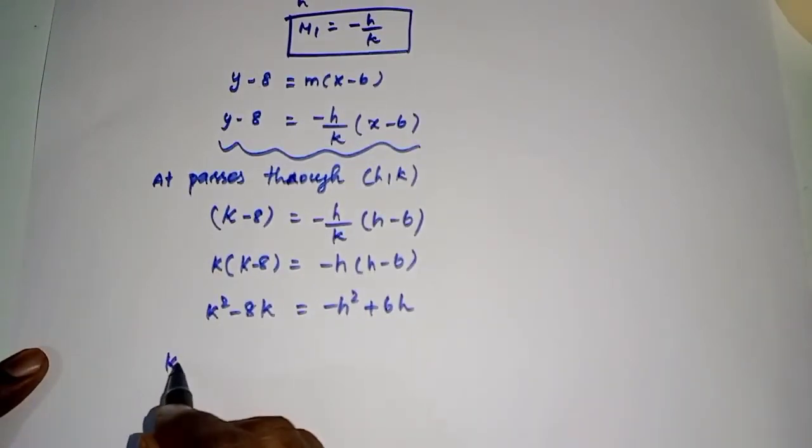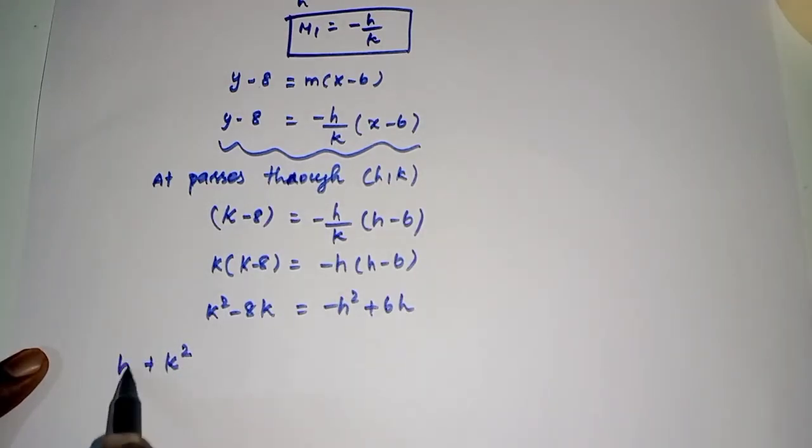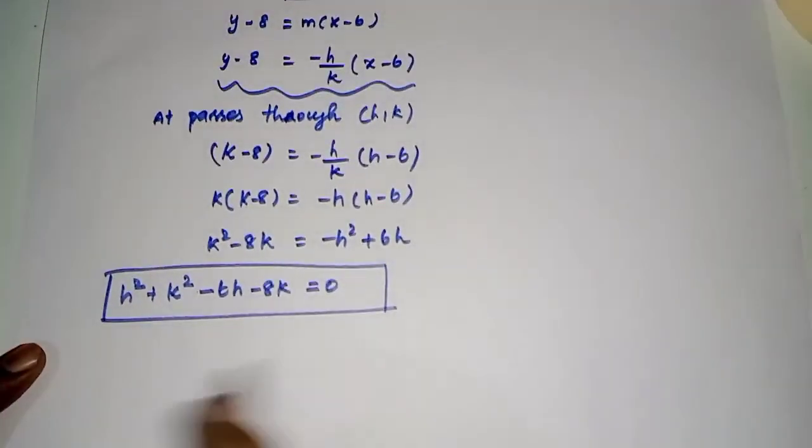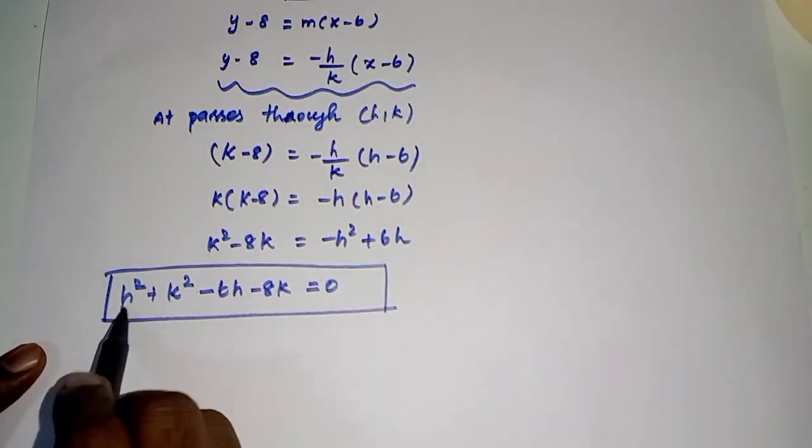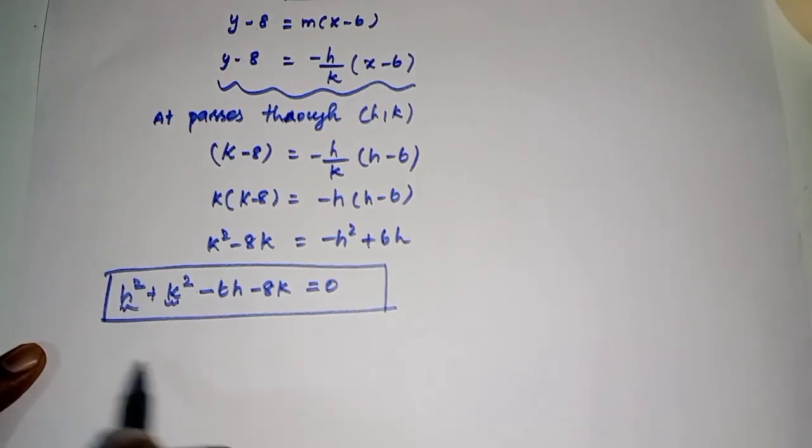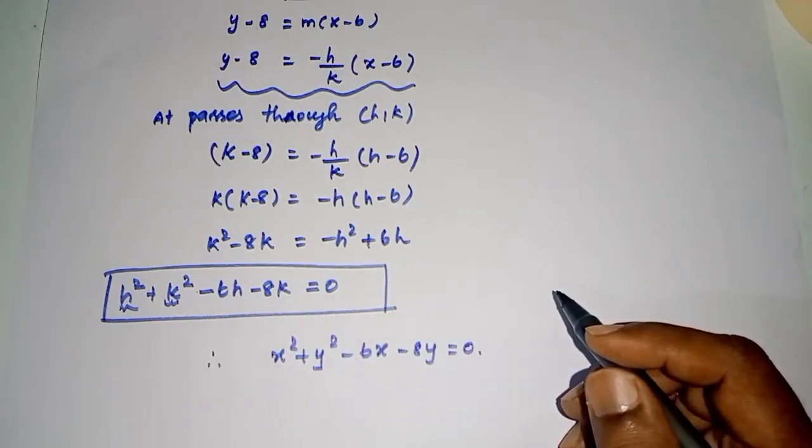So bring everything to one side: k² + h² - 6h - 8k = 0. Since the locus point uses h and k, we replace h with x and k with y. So we get x² + y² - 6x - 8y = 0. Okay, thank you.